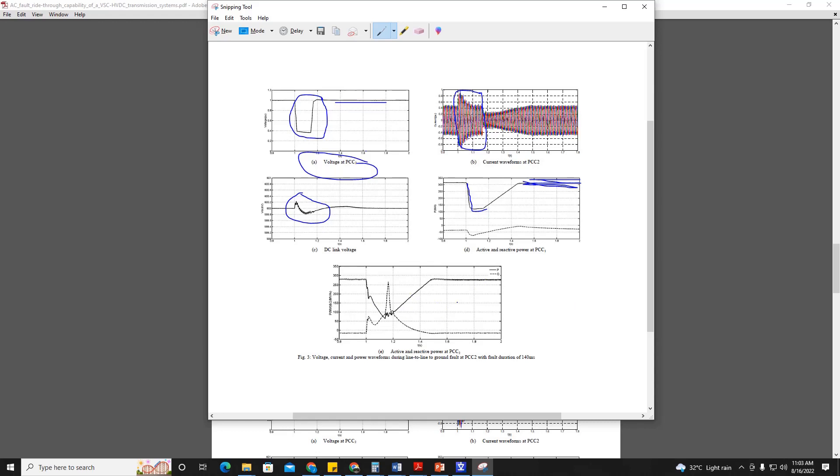This is the situation for power and reactive power at PCC2. We can see that the values have returned to their normal values after the fault ride-through.